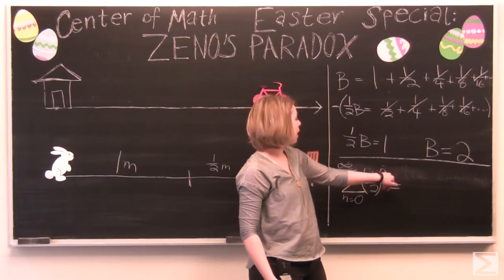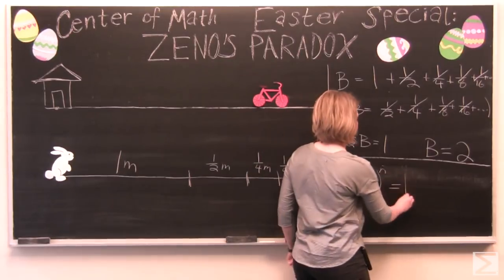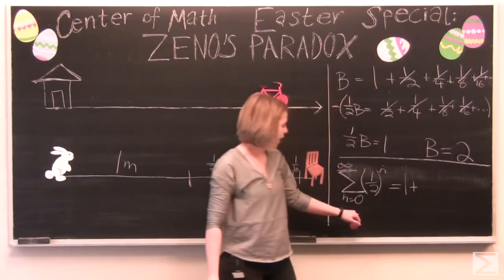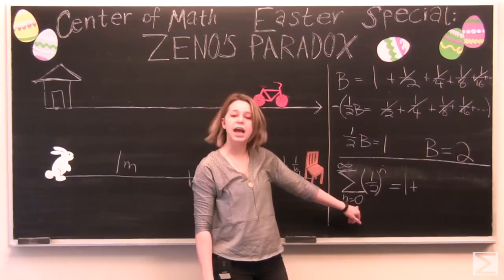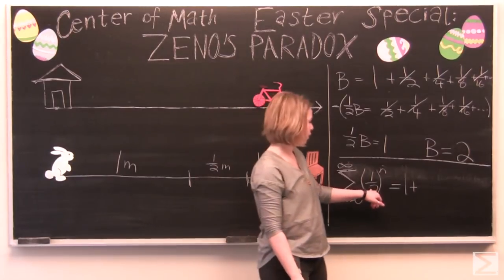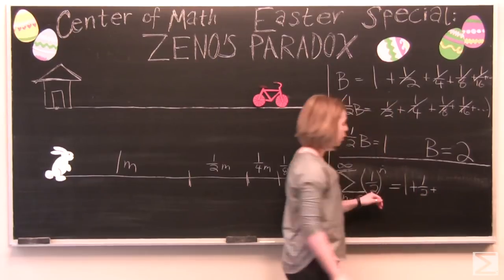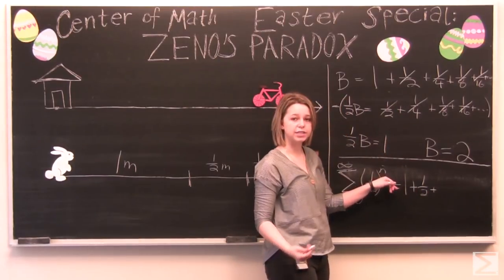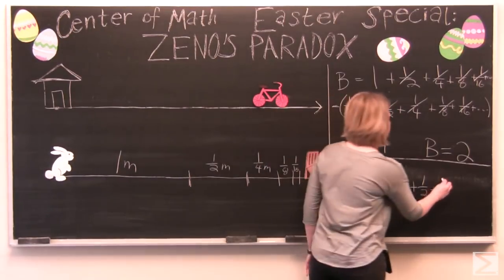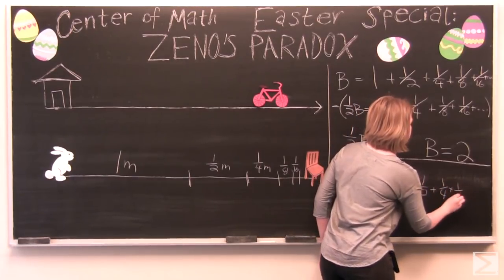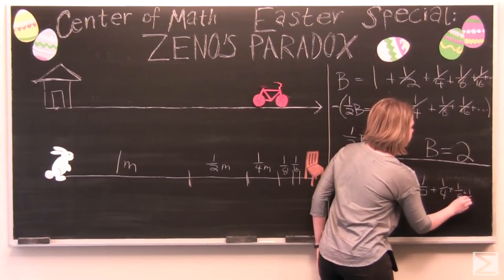So anything raised to the power of zero is just one. Plus, and our second term is where n is equal to one. So one half to the power of one is one half. One half to the power of two, our next term in this series, is going to be one quarter. And this is going to continue on and on infinitely.